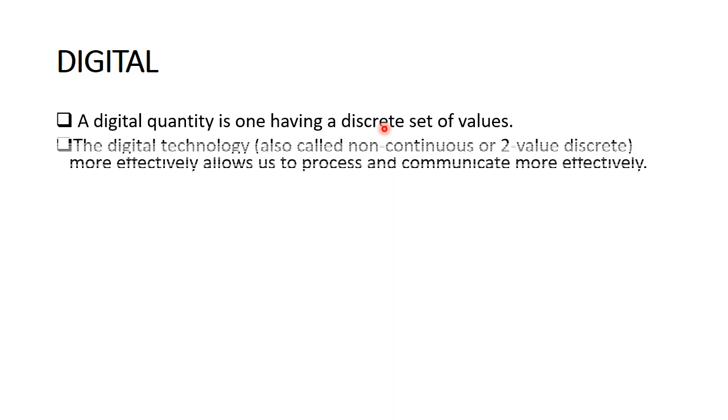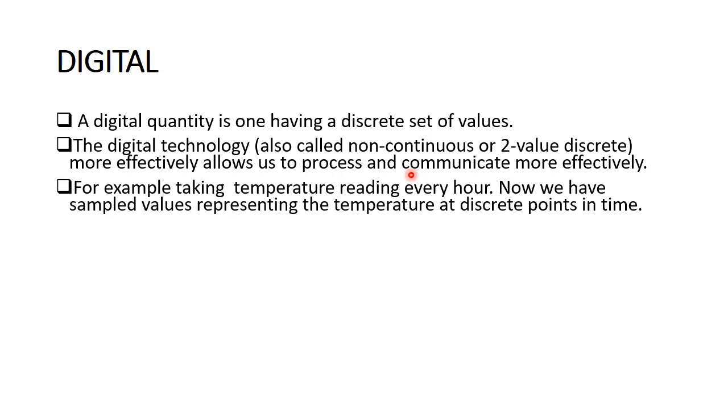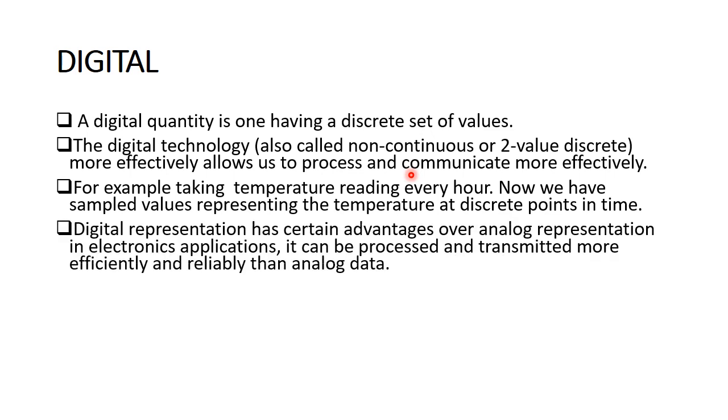Time, pressure, distance - every quantity we are measuring in daily life is an analog quantity. Digital quantity is one having a discrete unique set of values. Digital technology, which is non-continuous or we can say two-value discrete, is very effective and easy to communicate with.